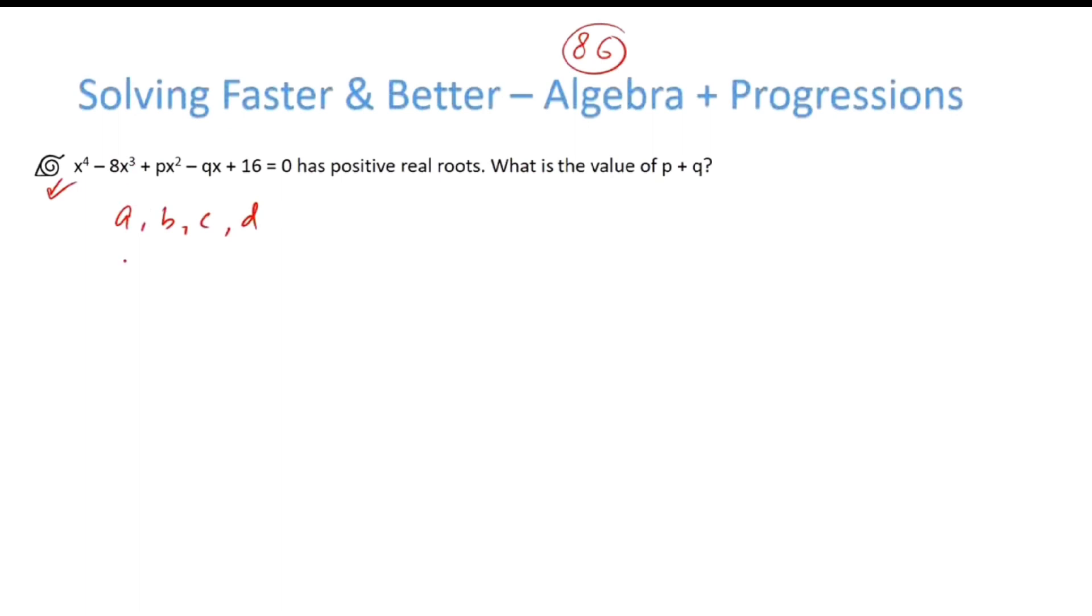The sum of roots will be a plus b plus c plus d, which is given as minus of this number divided by the coefficient of x to the power 4, so that becomes 8.